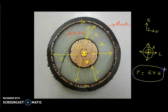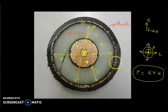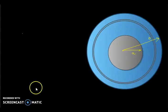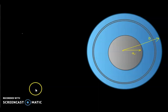We use this Poynting theorem to derive an equation representing the power flow through the coaxial cable in terms of voltage and current. Now let us move to the schematic diagram, which makes it easy to derive the mathematical expressions and connect the different parameters.